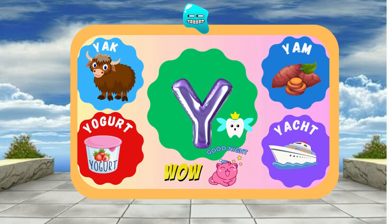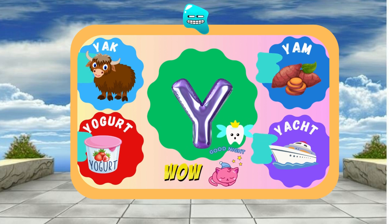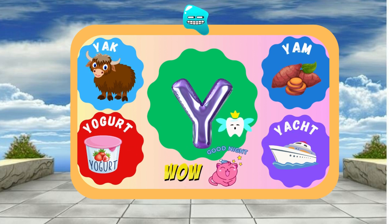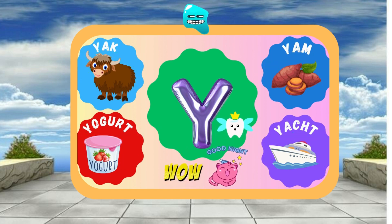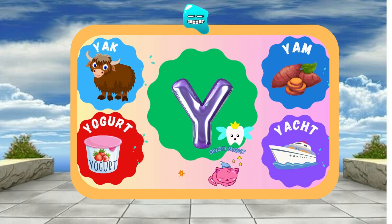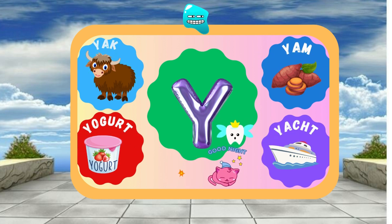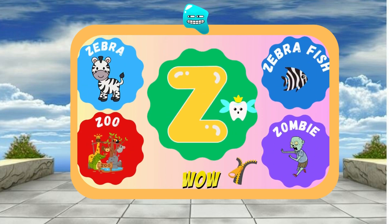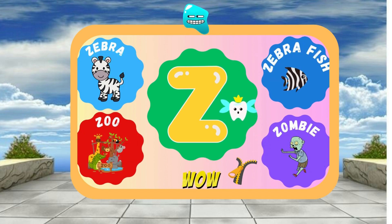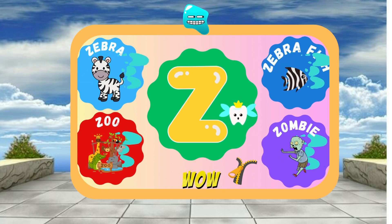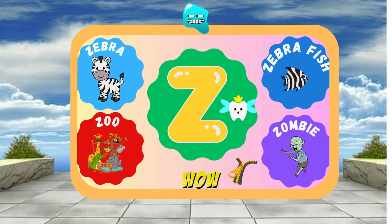Y is for Yacht — Y, y, Yacht. Y is for Yawn — Y, y, Yawn. Z is for Zebra — Z, z, Zebra. Z is for Zip — Z, z, Zip.